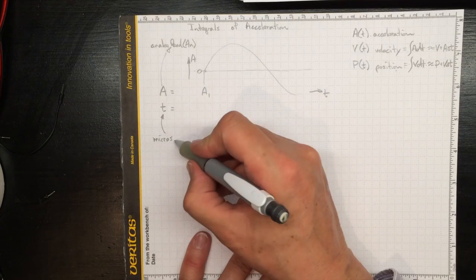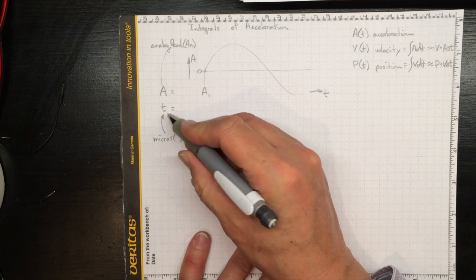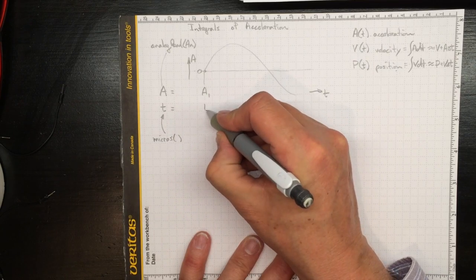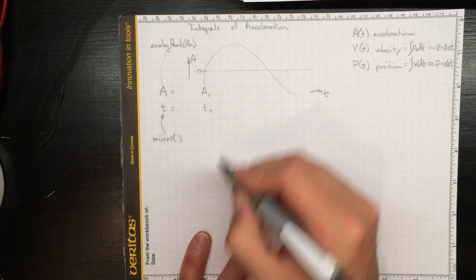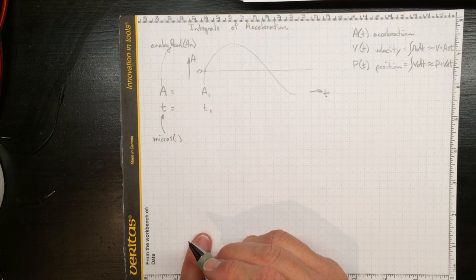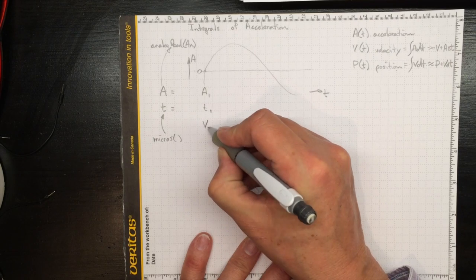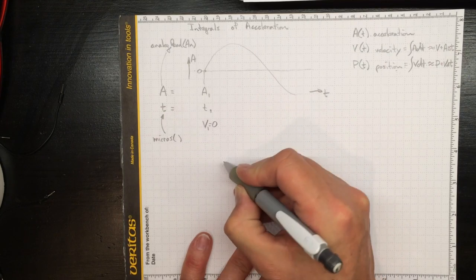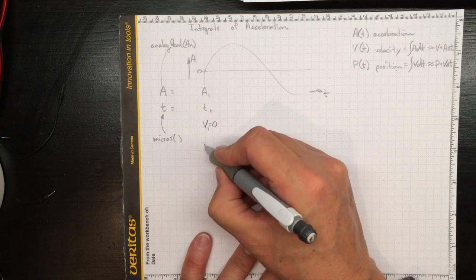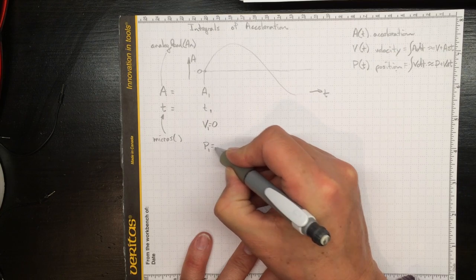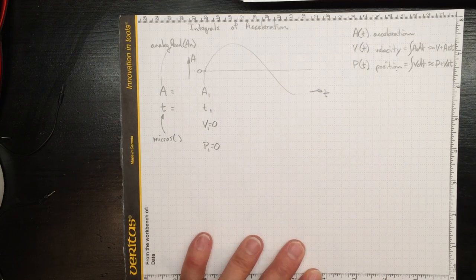And we can get from the micros function what the time is in microseconds at that time. And we know, because we started out not moving perhaps, that v1 equals zero and that p1 equals zero. We knew where we were.